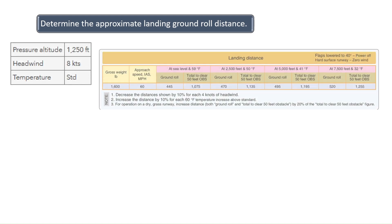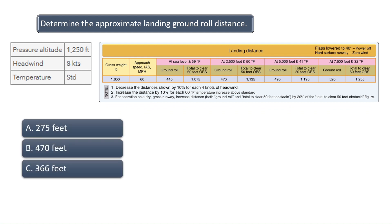Determine the approximate landing ground roll distance for an aircraft given the current set of conditions. The pressure altitude is 1,250 feet, headwind is at 8 knots, and temperature is standard at 15 degrees Celsius or 59 degrees Fahrenheit.